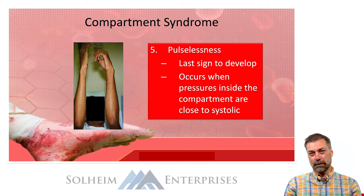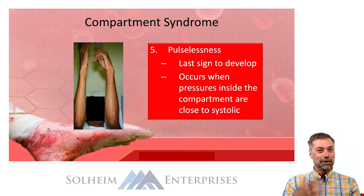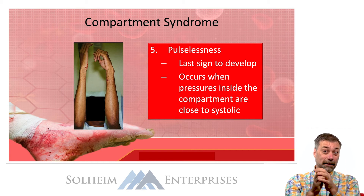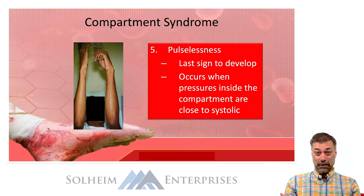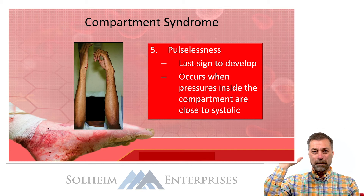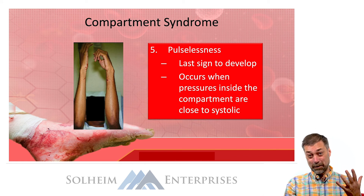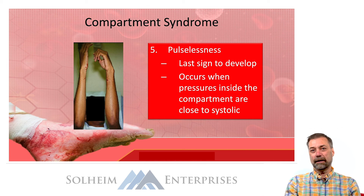An even later finding — in fact, this one's almost silly to teach, but it is a P. The fifth P is pulselessness. Think about it: what would the pressure inside the compartment have to be for the limb to be pulseless? In order to be pulseless, the pressure inside the limb would have to exceed your systolic pressure. So if the patient's systolic pressure is 120 mmHg and there's no pulse, the pressure in the limb blocking blood flow has to be at or above systolic pressure. Remember, any compartment pressure above 20 is considered elevated — so if pressures are high enough to cause pulselessness, compartment syndrome was present way back at 20. This is obviously a very, very late finding. You do not wait for pulselessness.